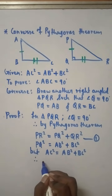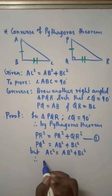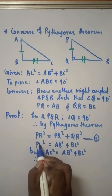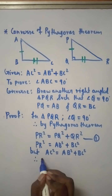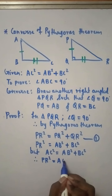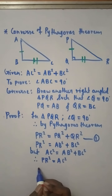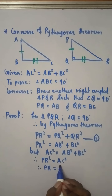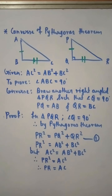But from the given, we have AC² = AB² + BC². Therefore PR² = AC², and therefore PR = AC.